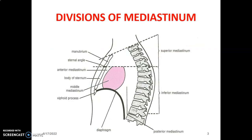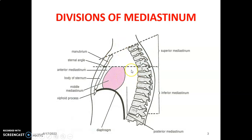The mediastinum is divided into two parts: superior mediastinum and inferior mediastinum. This division is between the sternal angle of Louis anteriorly and the junction between the fourth and fifth thoracic vertebra posteriorly. The boundaries of the thoracic cage are superiorly from the upper border of the manubrium to the superior border of T1, posteriorly T1 to T12, anteriorly the sternum, and inferiorly the diaphragm. The mediastinum is divided by a line passing through the sternal angle of Louis to the T4-T5 junction.